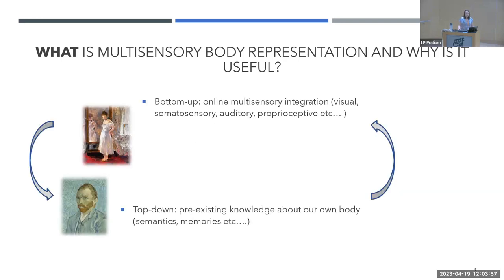Two mechanisms can contribute to multi-sensory body representation: bottom-up and top-down. Bottom-up mechanisms relate to perception — the integration of multiple sensory inputs such as visual, somatosensory, and auditory. Top-down processes relate to the persistent knowledge about our body — the semantics and memories of our body. These two mechanisms are not completely separated; they co-construct each other. Multi-sensory integration is fundamental to create our persistent knowledge about our bodies.